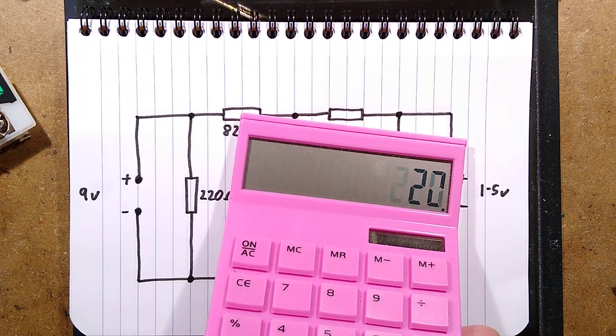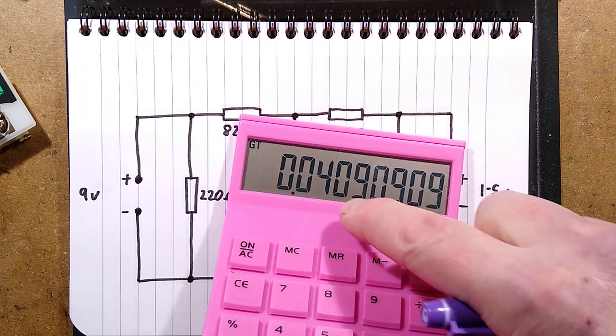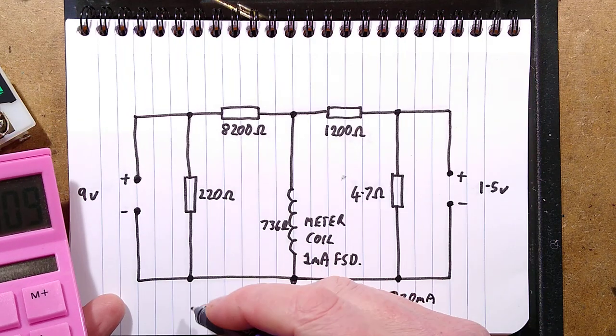divided by the 220 ohms. So it's going to load it down with about 40 milliamps. So let's write 40 milliamps here.